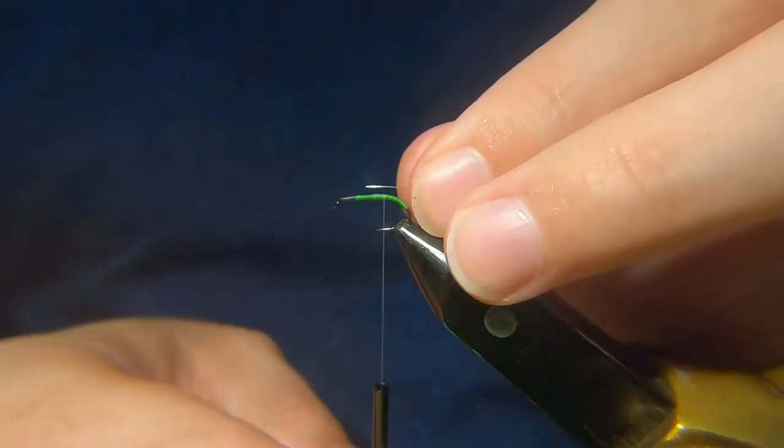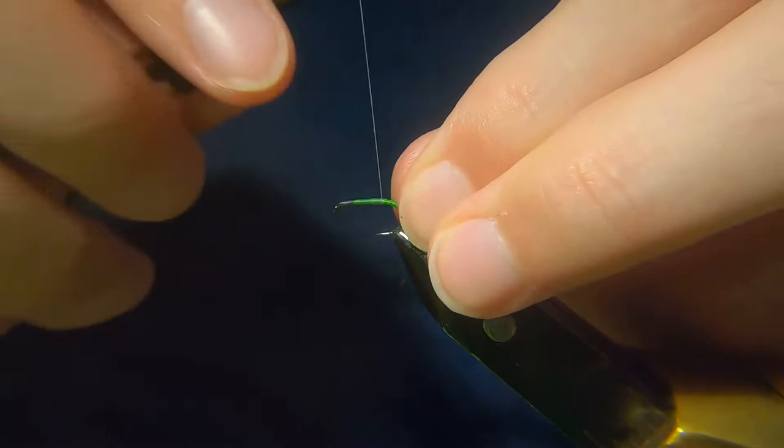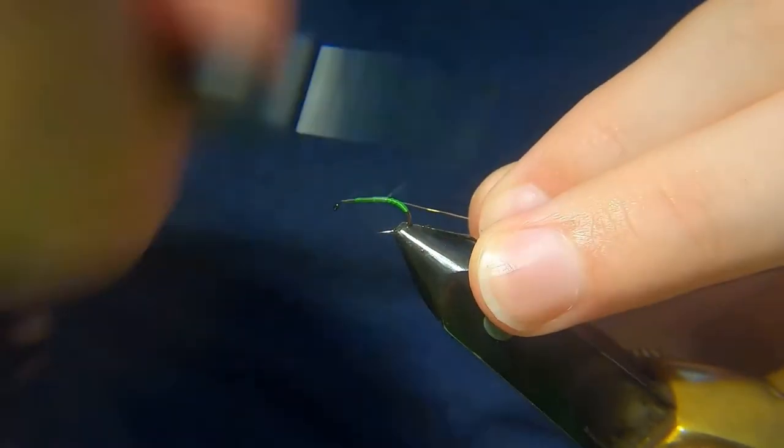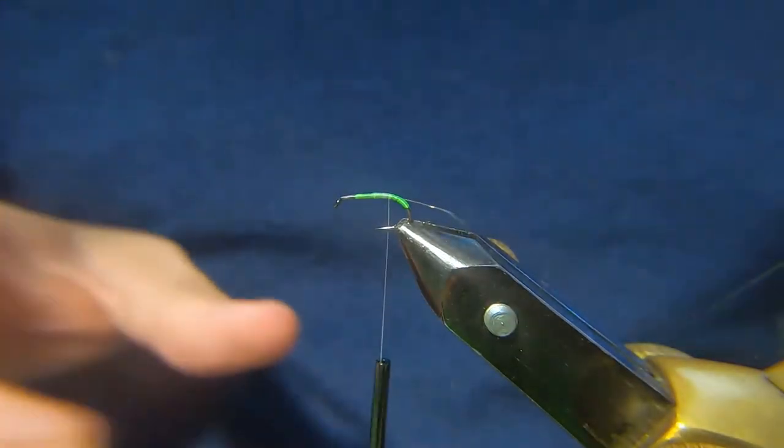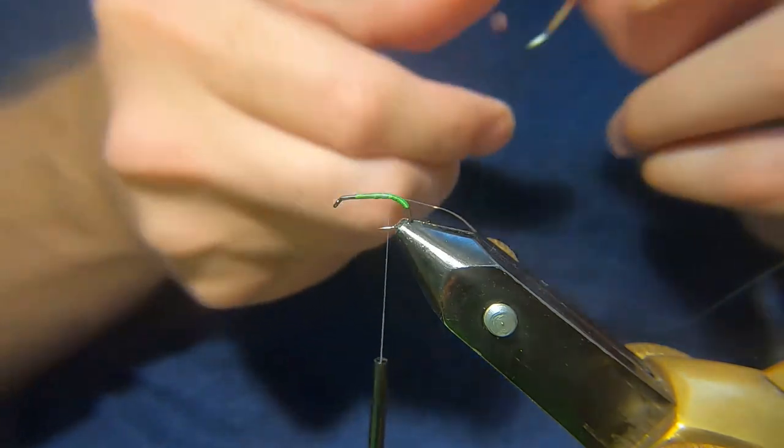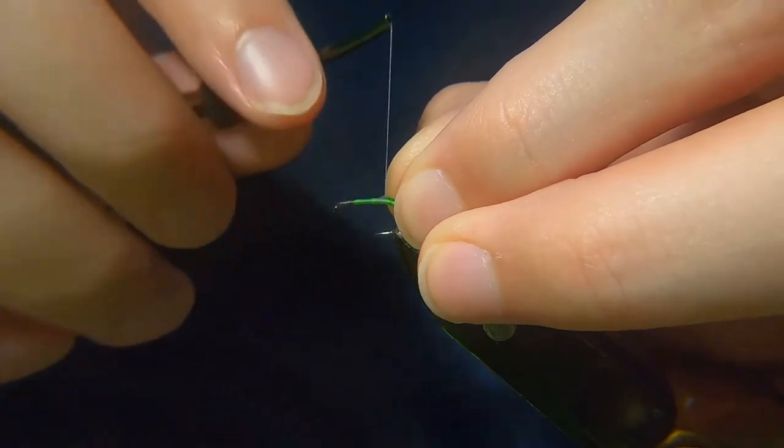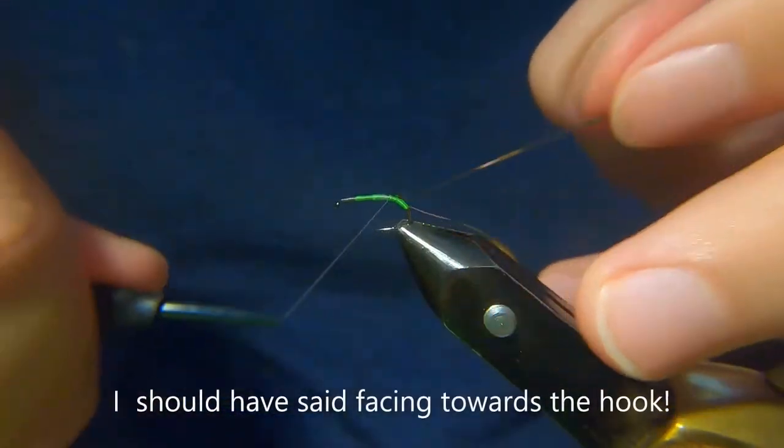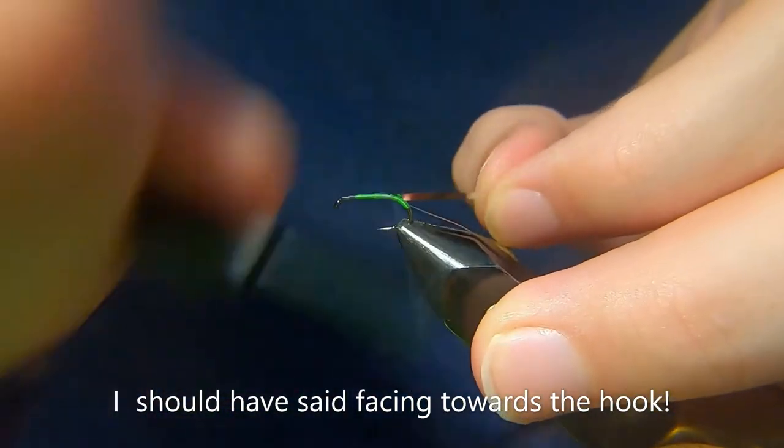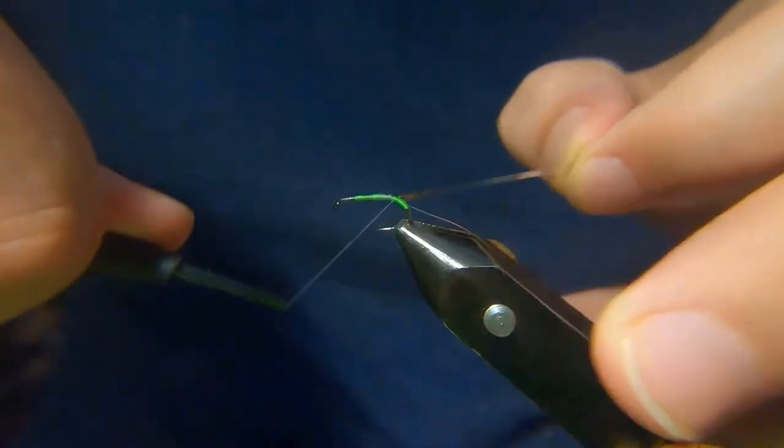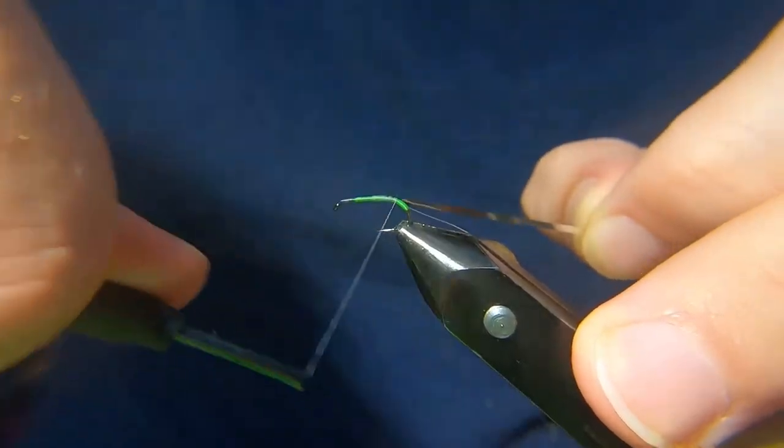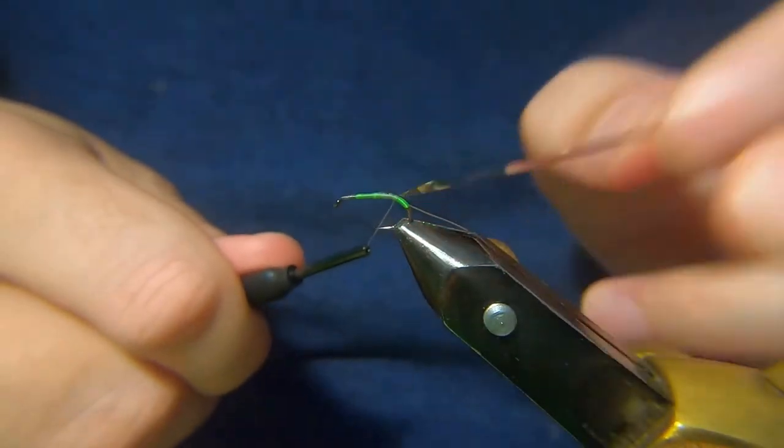So we'll tie in the wire first and then we'll come in with our mylar tinsel. You want the gold side up, you're going to tie the, whatever side you're wanting to show, you want that effectively facing away from the hook initially.